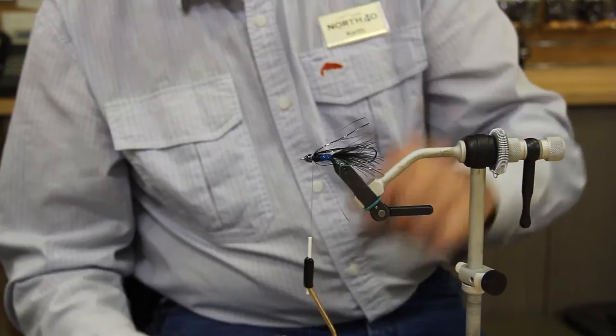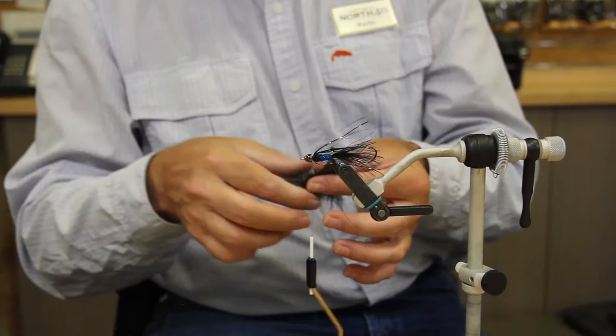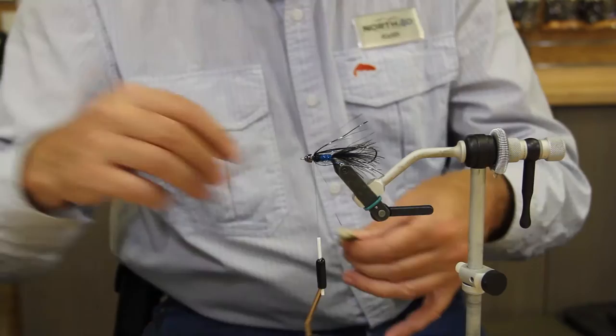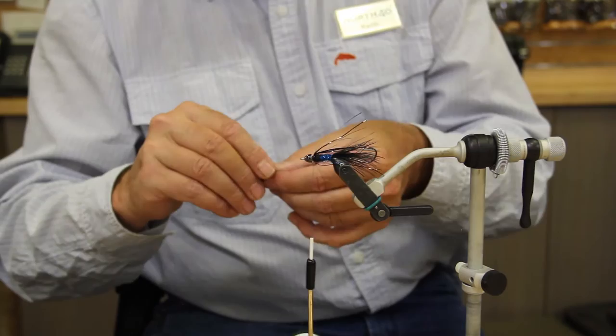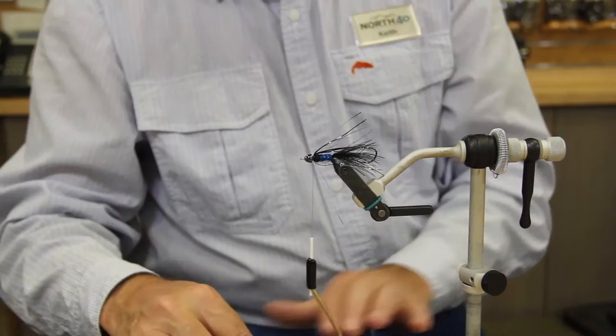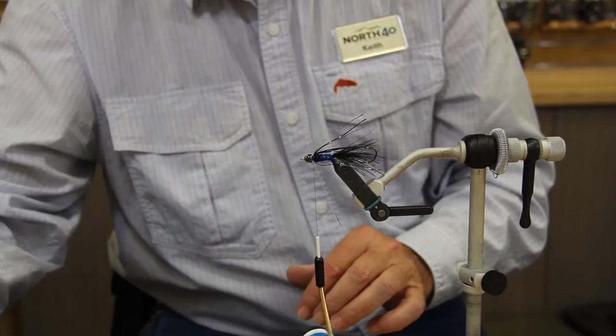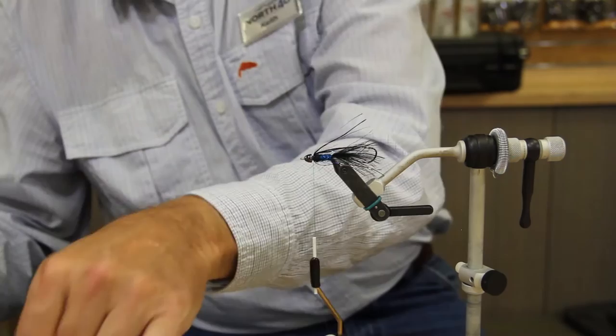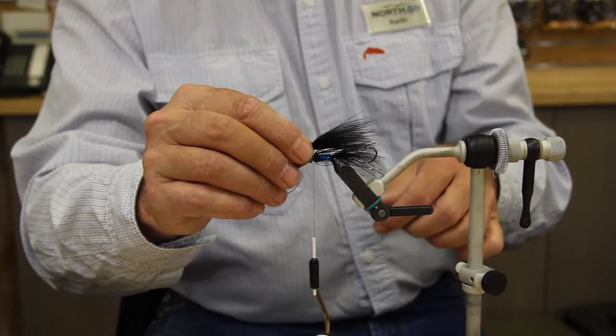Next thing we're going to do is just take a blood quill, marabou blood quill, black. And we're just going to strip off a little bit off the stem. Try to get everything kind of evened up there. And then you want not a lot, but enough to create a good wing. Sometimes you have to go through your marabou to find the right stuff.